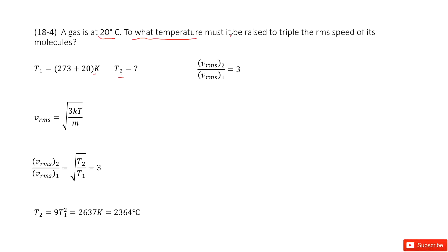We don't know T2 yet. Another quantity given is that the rms speed becomes 3 times that of the first situation. So that means v_rms in the second situation over v_rms in the first situation equals 3.